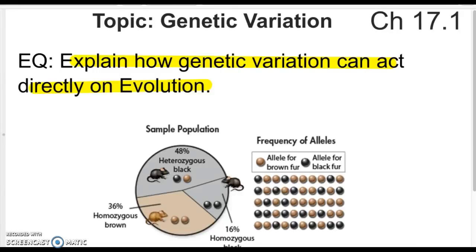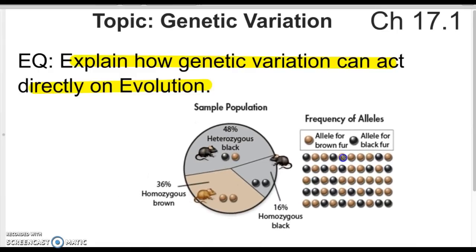Good evening. Tonight we are going to be in chapter 17.1 in our video notes. Our topic is genetic variation, and we're going to explain how genetic variation can act directly on evolution and how genetics and genes relate to how things are changing over time.